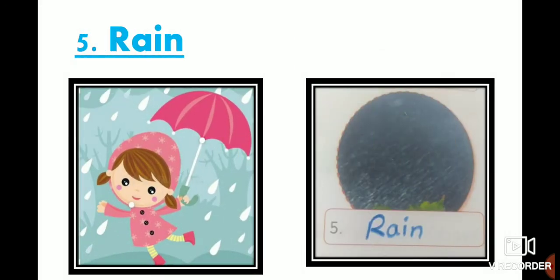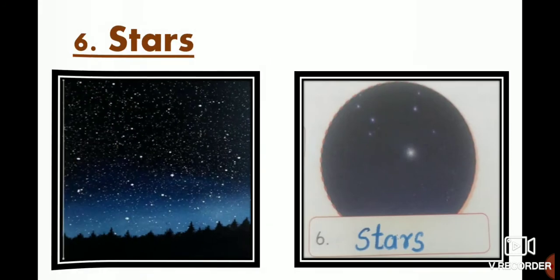Now which one? Yes, this also comes from the sky. What is it called? Barish. Rain, right? Can you see this beautiful girl dancing in the rain? So what do we call barish in English? Rain. R-A-I-N. Rain. I repeat again: R-A-I-N. Rain. You have to learn all these spellings and write the full line in your notebook.